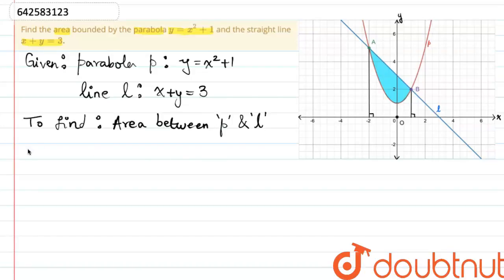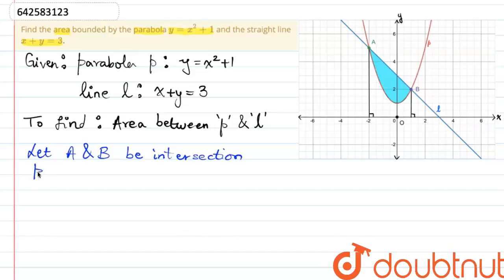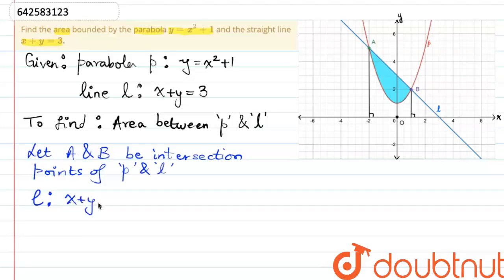Let us start finding the points of intersection of the two curves P and L. We shall name these points of intersection as A and B. Then at these points, we know that according to the equation of the line, x plus y is equal to 3, or y is equal to 3 minus x.